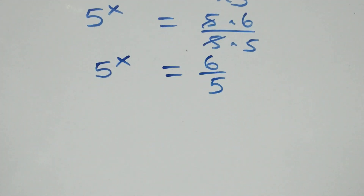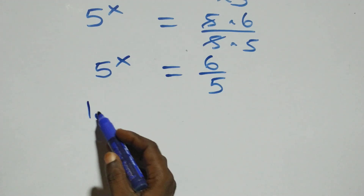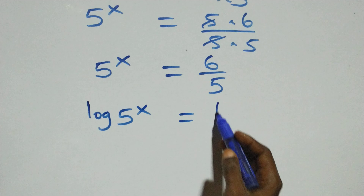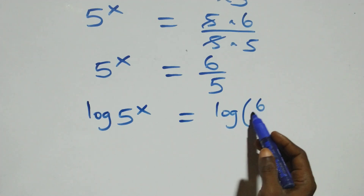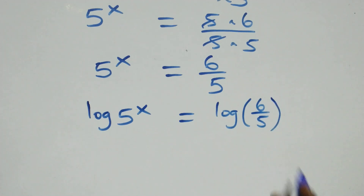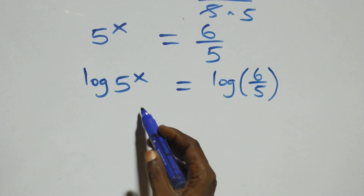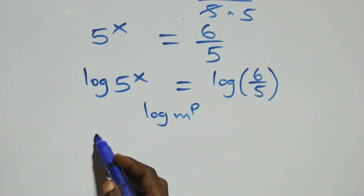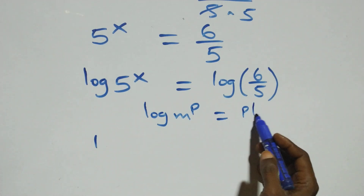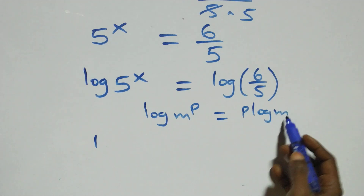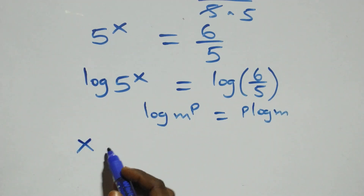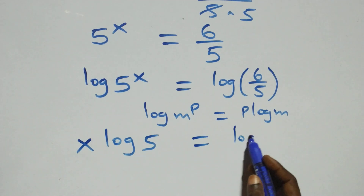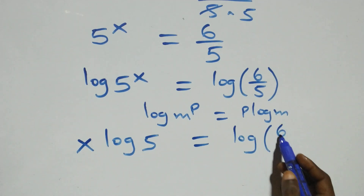Then the next step here, we take the log on both sides. We have log of five raised to power x equals to log of six over five. Then here we apply the power rule of logarithms: log m raised to power p is the same thing as p log m. So what we have becomes x log five equals to log six over five.